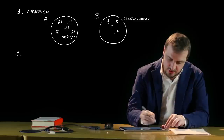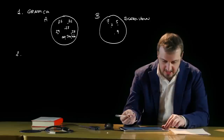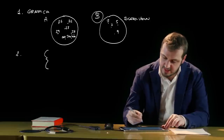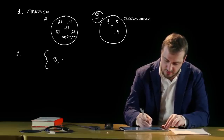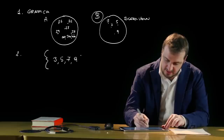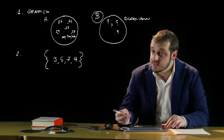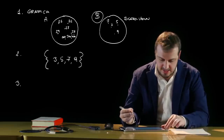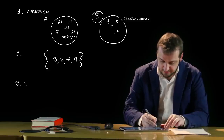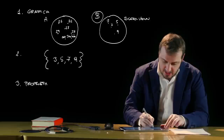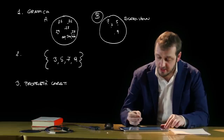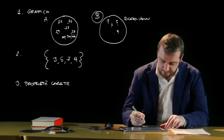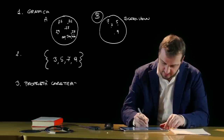Una seconda rappresentazione degli insiemi può essere fatta tramite l'elencazione: vengono elencati gli elementi all'interno di parentesi graffe, tutti separati da virgole. Non è importante l'ordine in cui vengono inseriti, né devono essere ripetuti. Una terza rappresentazione, la più utilizzata soprattutto quando gli elementi sono molteplici, è quella che descrive la proprietà caratteristica dell'insieme, ossia quel criterio oggettivo ed univoco che consente agli elementi di essere inclusi o meno.